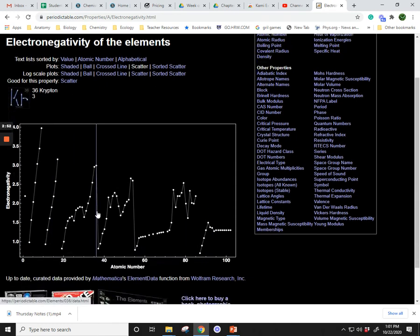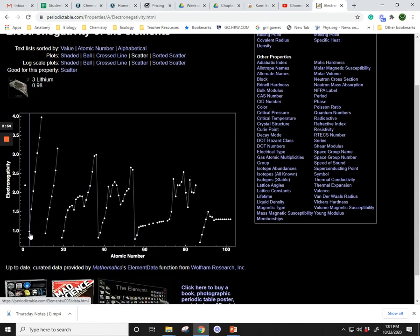We can see that as you go from lithium across a period to fluorine, they increase. So across periods they increase. Across a period it increases, across a period increases. Got a few anomalies here, but the general trend is they increase—increasing and then increasing.